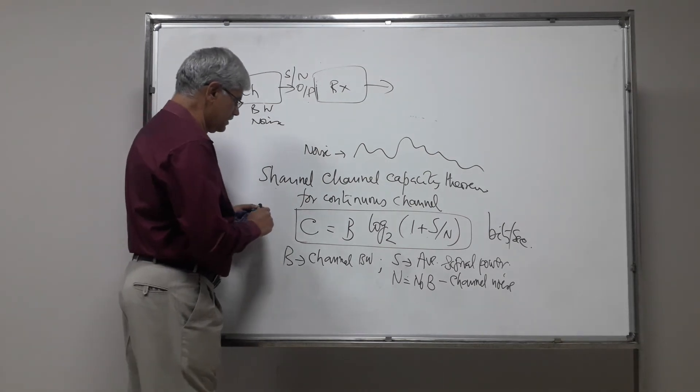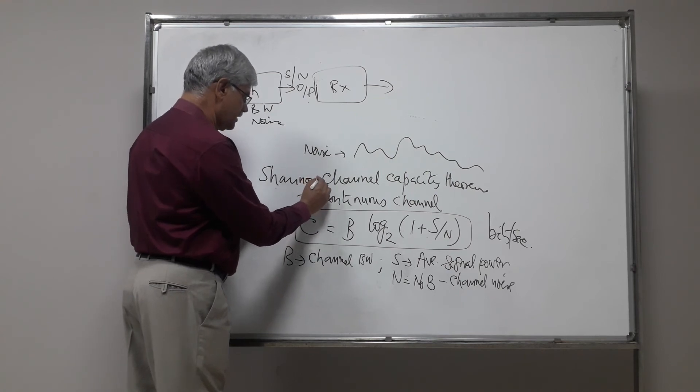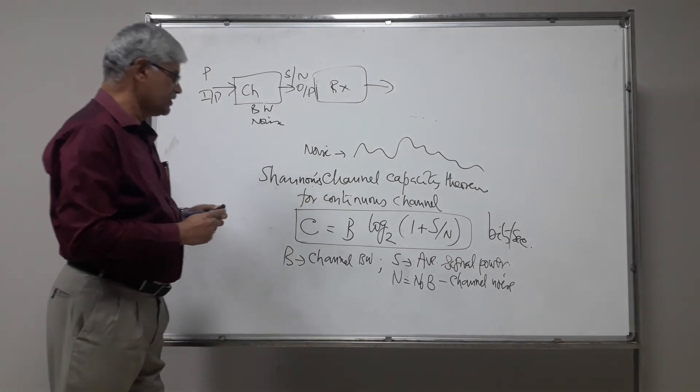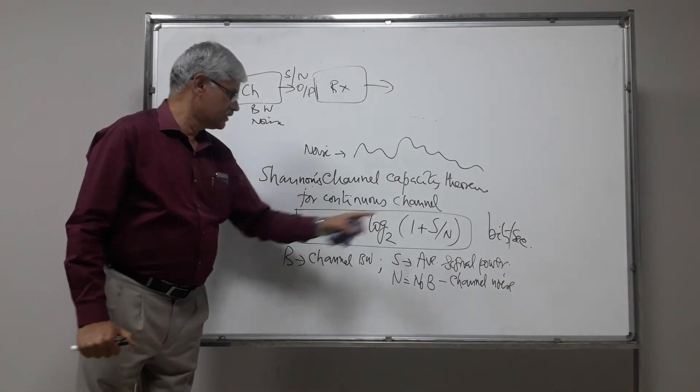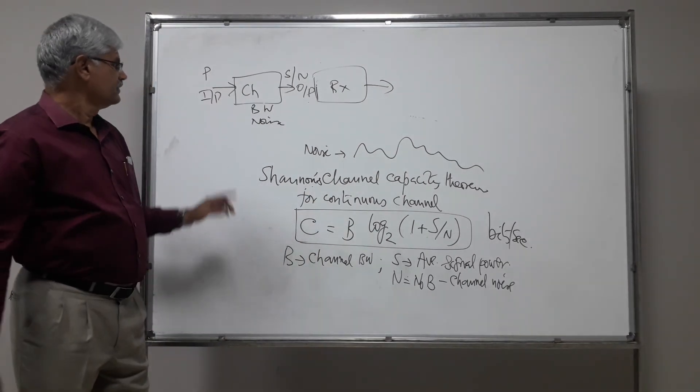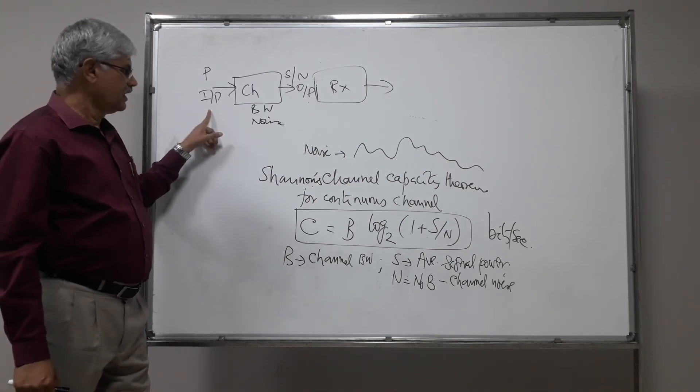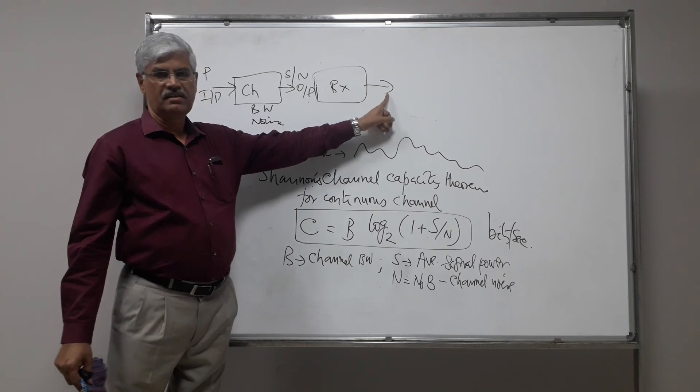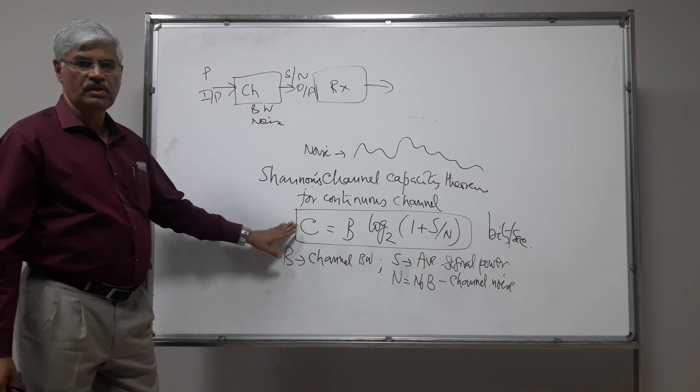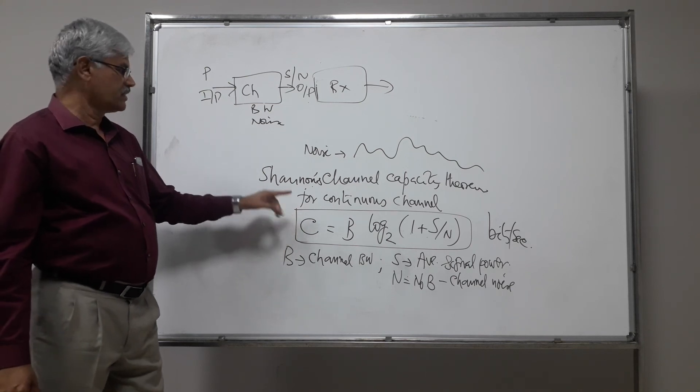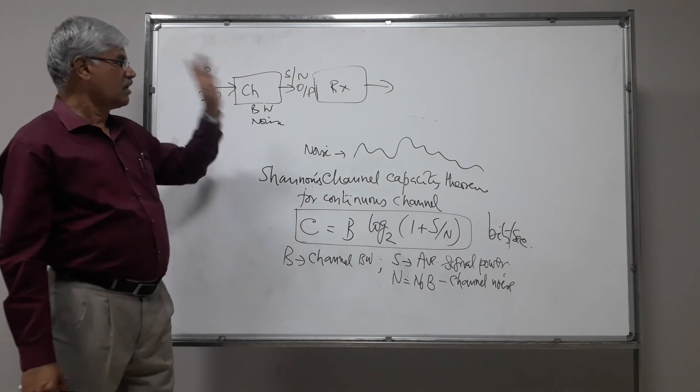Shannon has proved that this is this much. Now suppose if one tries to transmit at a higher rate at the input, then it will result in error. So this is the maximum rate at which one can transmit. This is what we understand from the channel capacity theorem for a continuous channel.